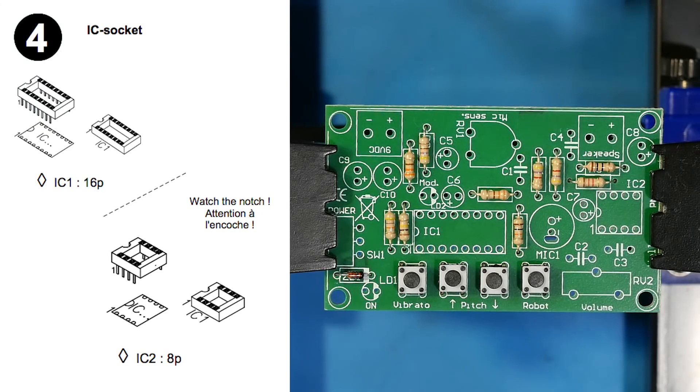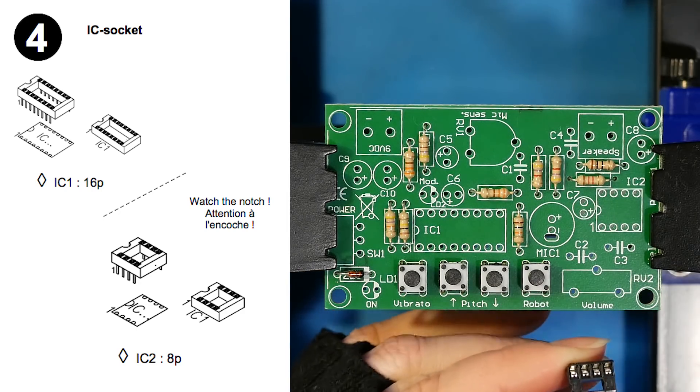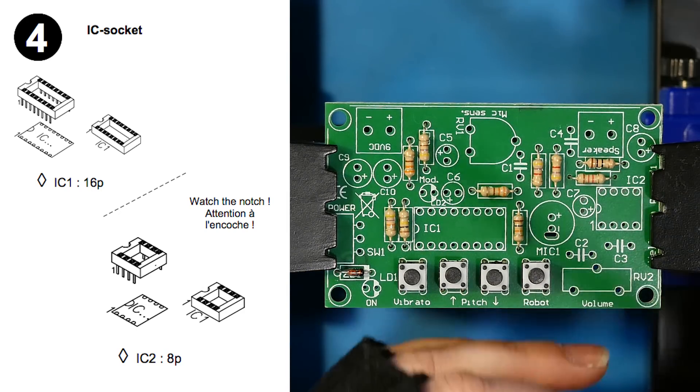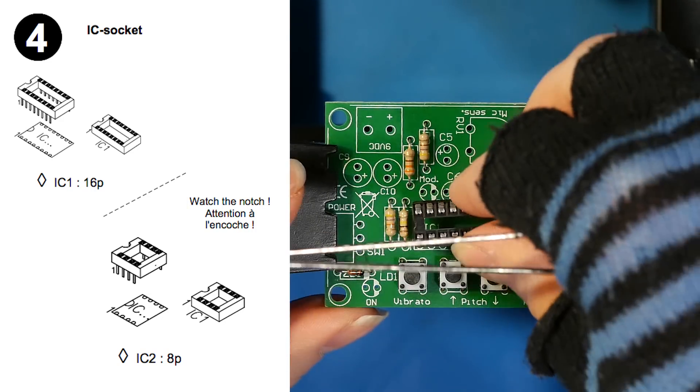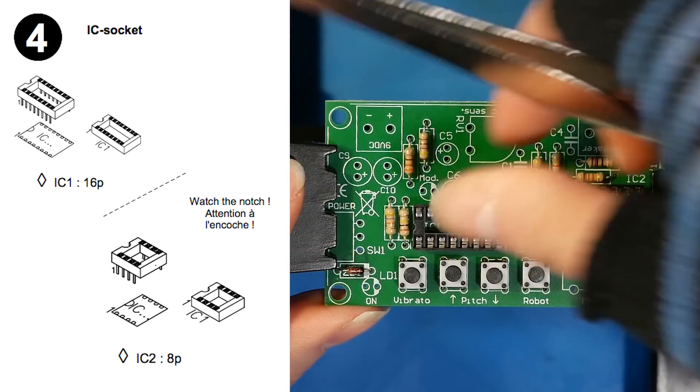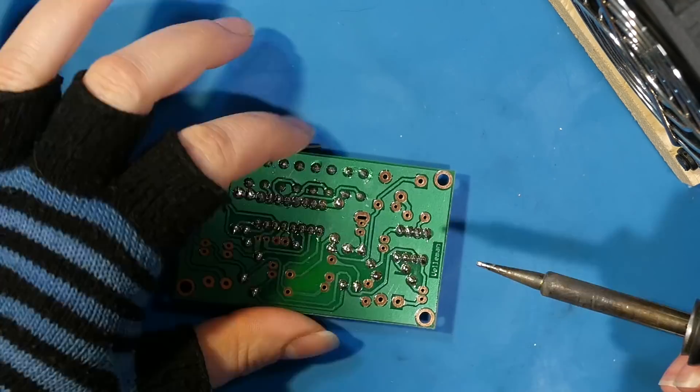This project, like many others, used sockets instead of soldering the ICs directly in place. This way, if the chip becomes damaged, it can be easily replaced by just pulling it out of the socket, rather than having to desolder all of those pins. Plus, desoldering all of those pins at once would require a lot of concentrated heat that could damage the rest of the board. When placing your sockets, mind where the notch is on the socket and on the PCB and make sure that they're lined up, so that when you go to place your chips later, they're in the correct orientation. Since I'm right-handed, I find it easiest to start soldering in the upper left-hand corner and work my way down to the lower right-hand corner.